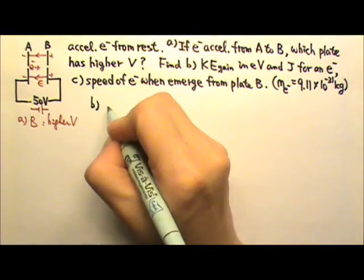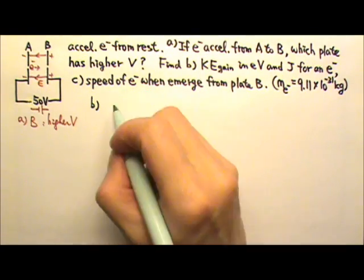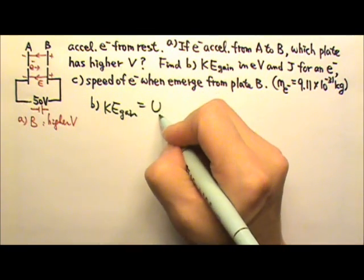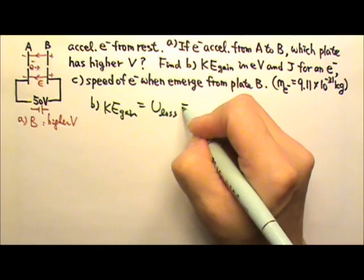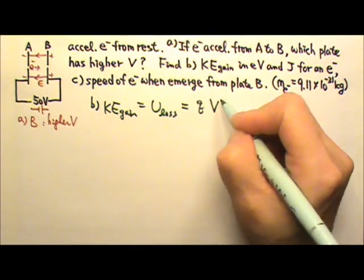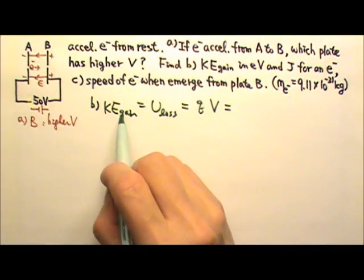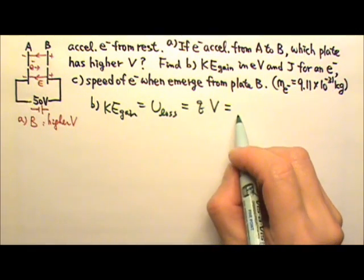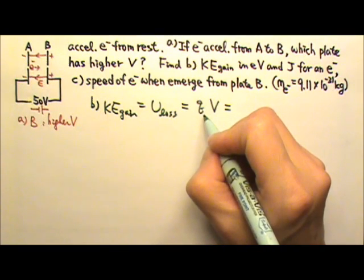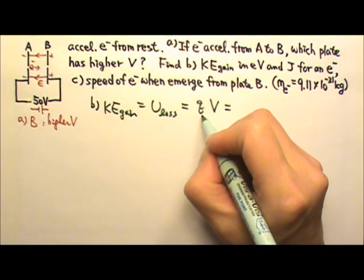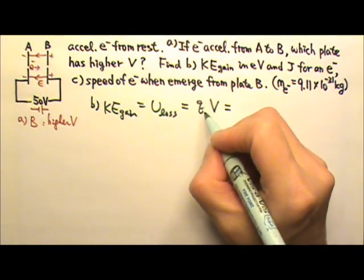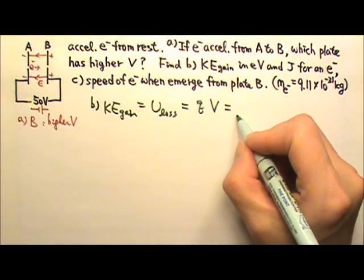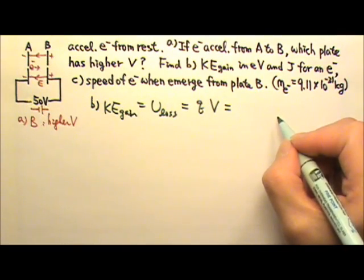Part B. We need to find the kinetic energy gain. The kinetic energy gain of the electron comes from the potential energy loss, where U equals QV. In this case, we already know the electron is going to gain kinetic energy, so the answer must be positive. That means we only have to plug in the magnitude for Q and V, not the signs, because we know our answer should be positive anyway.